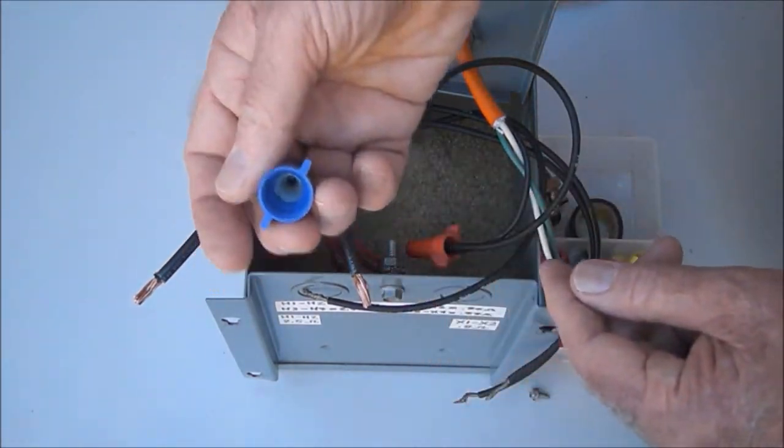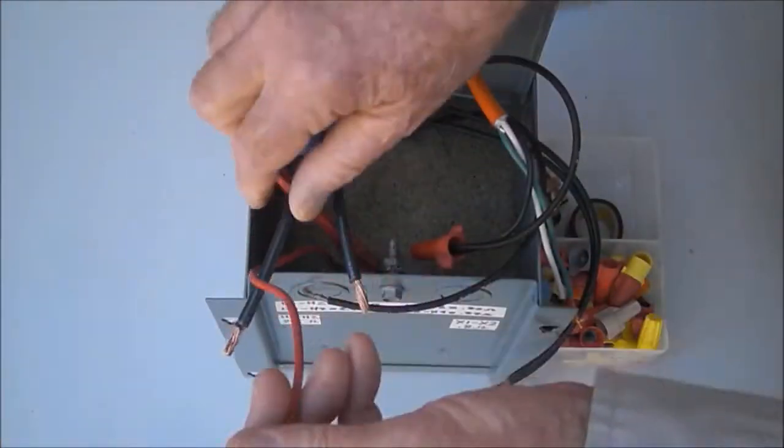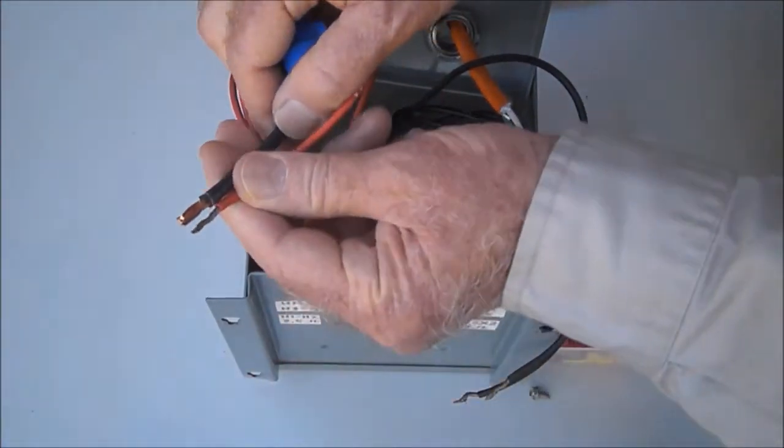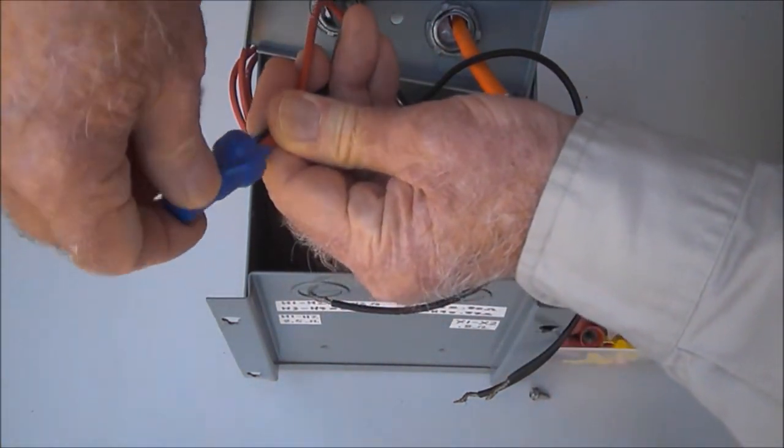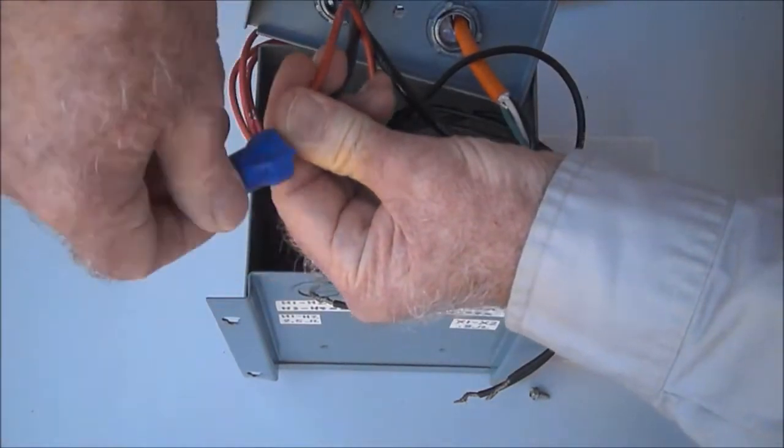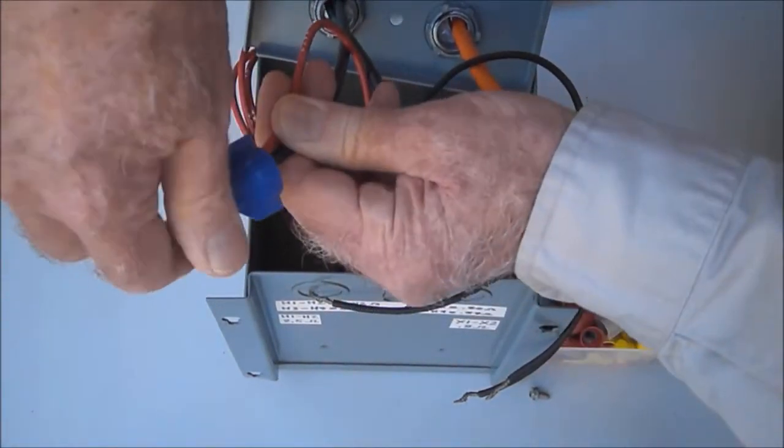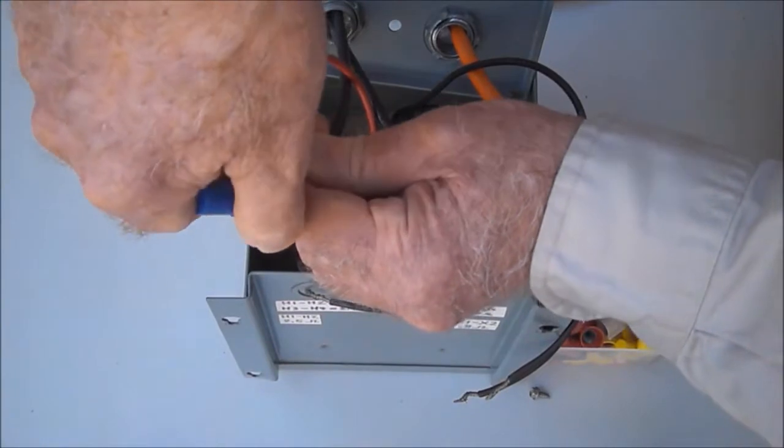We're going to use a larger wire nut like this one to connect this secondary wire to a larger outgoing wire. We screw that on in the same way and put enough torque on it to make sure that the connection is good.